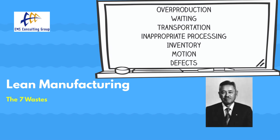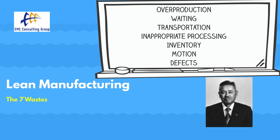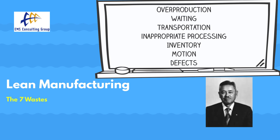The seven wastes was a concept initially created by Taiichi Ohno, a key figure at Toyota, often credited with the development of the Toyota Production System. The wastes Ohno identified were: overproduction, waiting, transporting, inappropriate processing, excess inventory or storage, unnecessary or excess motion, and defects.